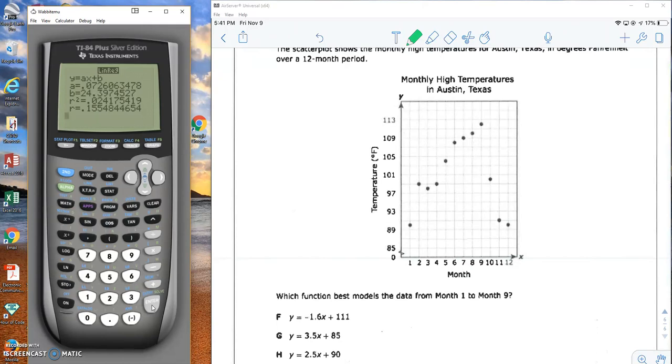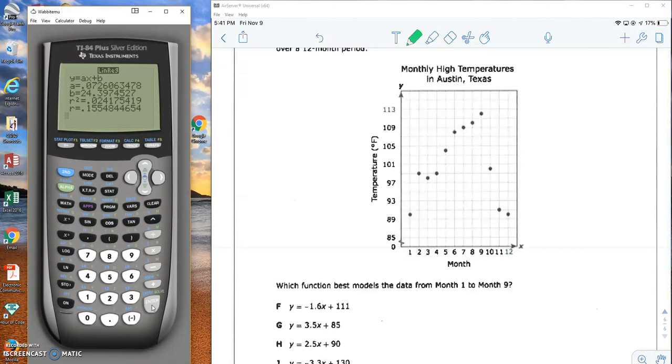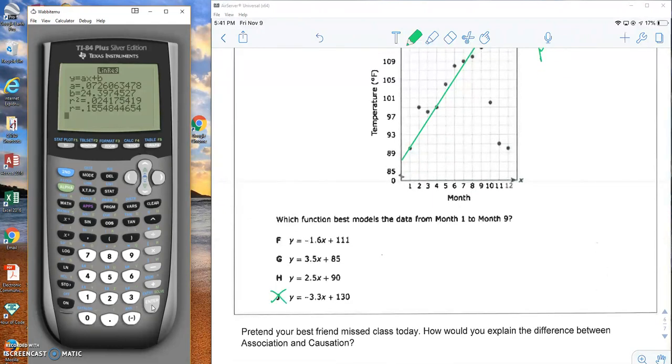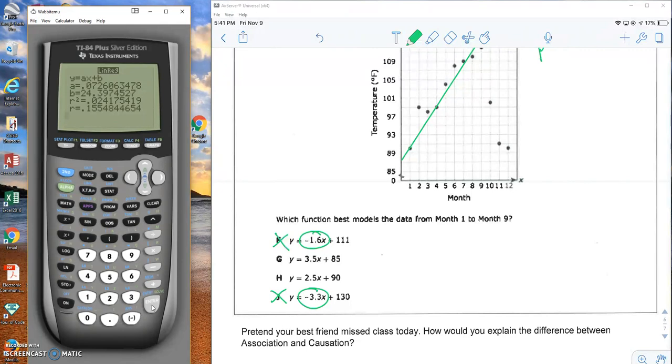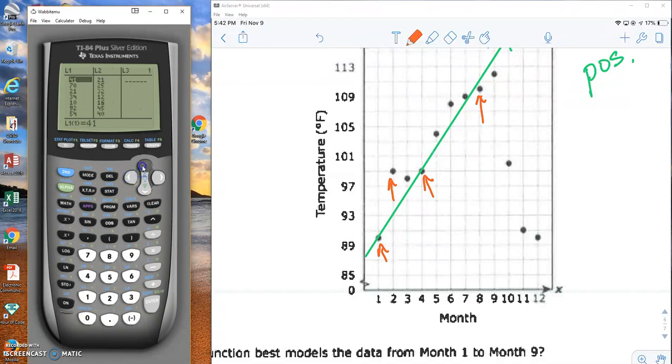So one more problem. We have the scatter plot showing the monthly high temperatures for Austin, Texas, in degrees Fahrenheit over a 12-month period, which function best models the data from month 1 to month 9. If we look at some data, let me just look at some things real quick. Looking at my answer choices, I can see if I were to draw a line, just trying to hit a couple of points, this has a positive increasing slope. So it cannot be F and cannot be J because these have negative slopes. Now, the next part is kind of hard to see. So what I'm going to do is I'm going to take a couple of these points and plug them in.